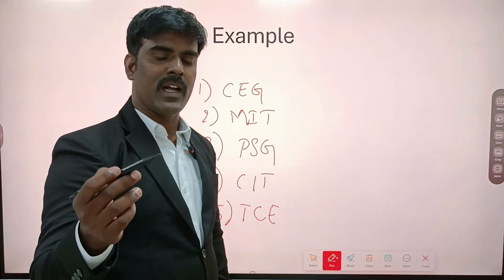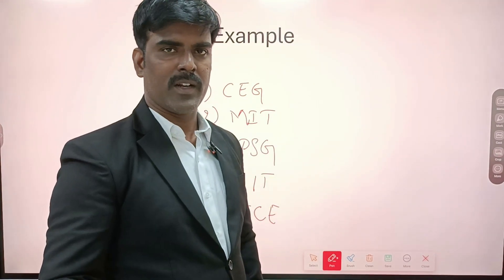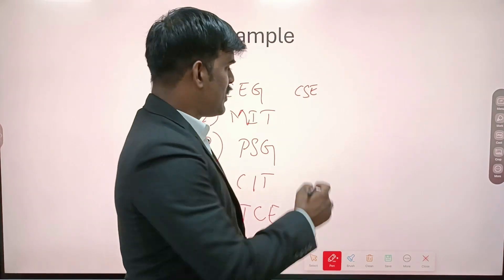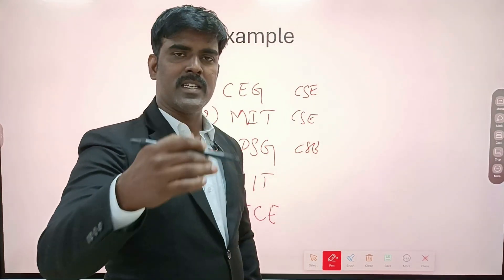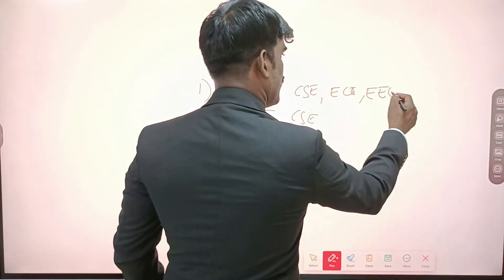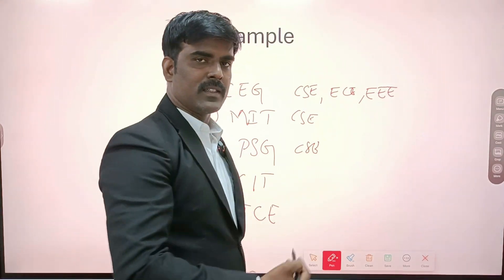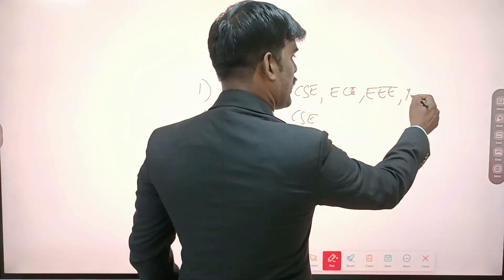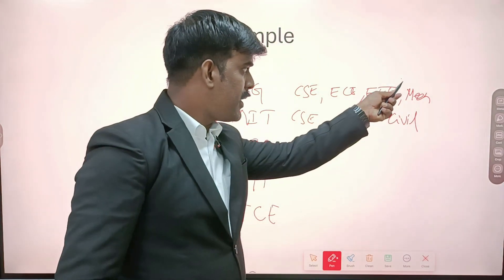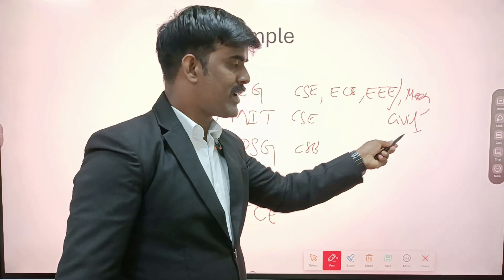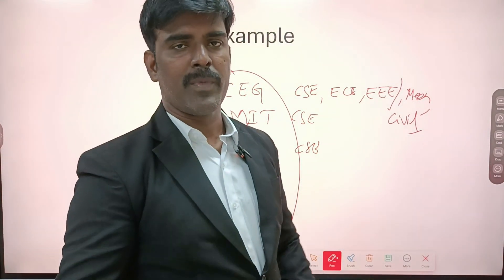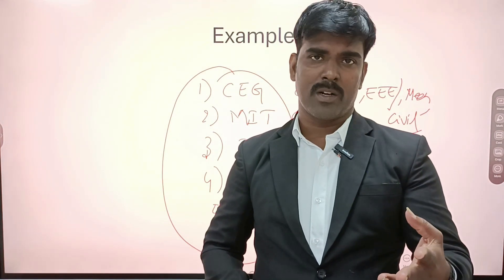For example, if a student comes to a cutoff and gets into CAC, then you go to a self-financing college. If you get CAC first, it's not advisable to directly jump. If you look at CAC, then you can get ECE, triple E. Similarly, ECEG, triple E. You can also get Civil. In self-financing college, you can give options for ECE, CAC, IT, AIDS, and triple E.